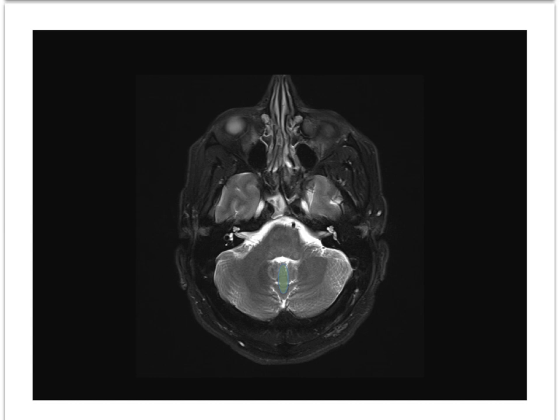Here is the vermis of the cerebellum in the posterior midline, flanked by the slightly darker dentate nuclei. Notice that the cerebellar vermis forms the roof of the 4th ventricle.